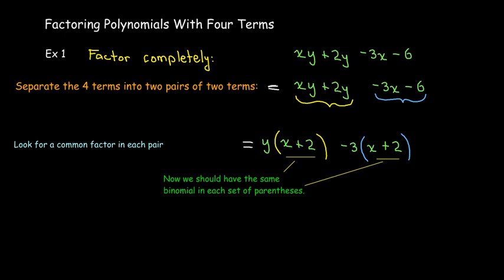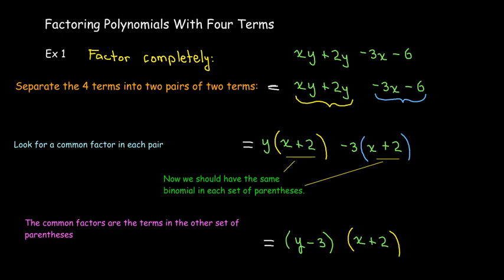The second step, because remember, we want to write this as the product of two binomials. One of the binomials we already found. It's x plus 2. And in fact, formally, we consider this as a common factor. And if I were to factor it out, what would be inside the other set of parentheses? I would have a y and a negative 3.